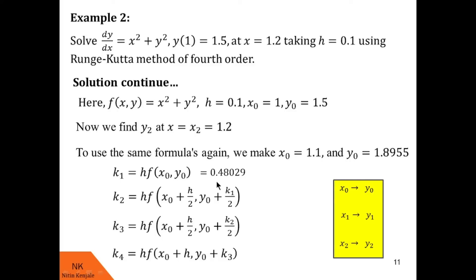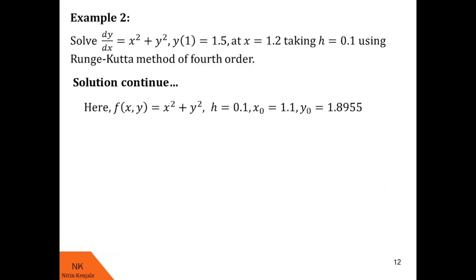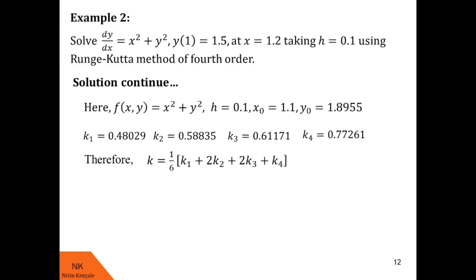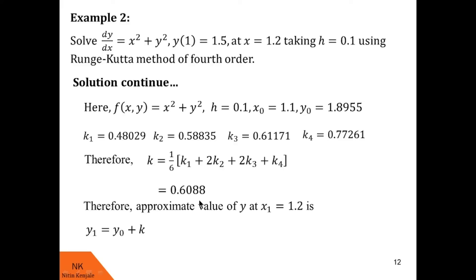With the updated values, we calculate k₁ = 0.48029, k₂ = 0.58835, k₃ = 0.61171, and k₄ = 0.77261. Substituting into the formula of k, we get k = 0.6088. Finally, putting this into y₁ = y₀ + k (with y₀ = 1.8955), we get y₁ = 2.5043. This is the solution at x = 1.2.